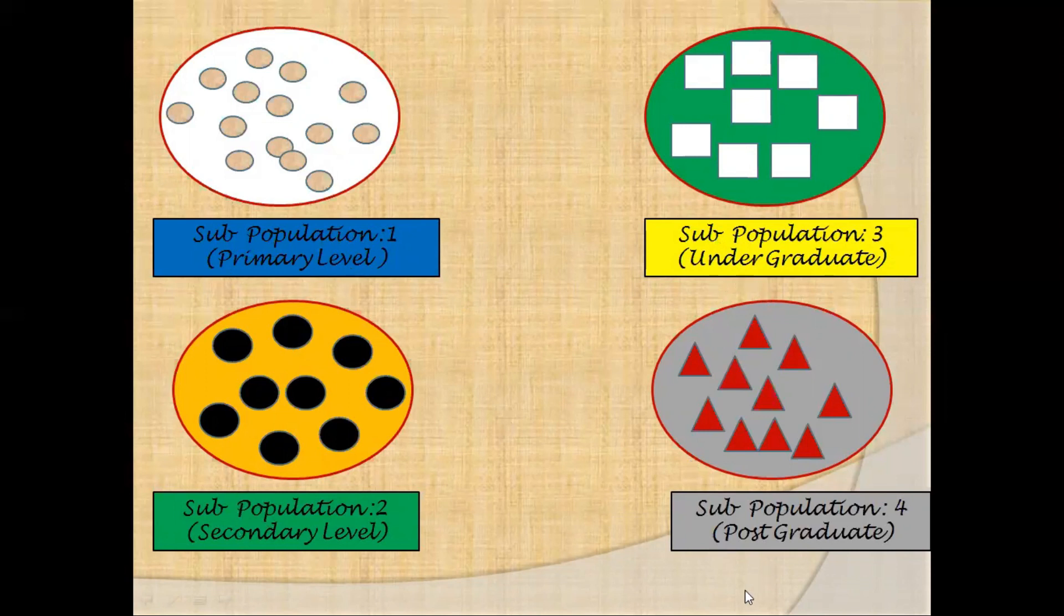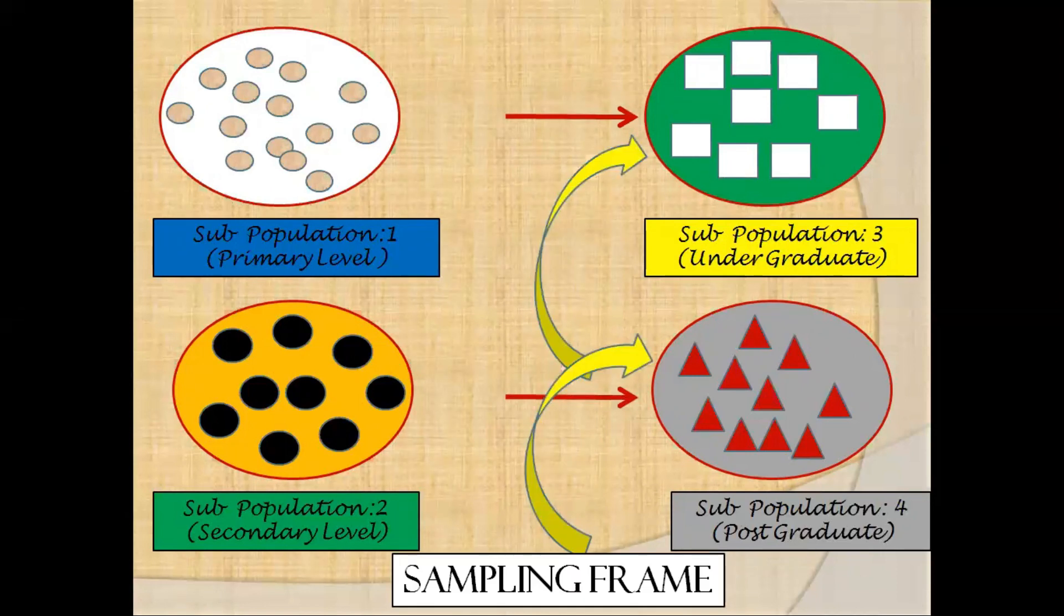Out of the four sub-populations, let's say the researcher will select two out of four for sample collection. Let's say the selected sub-population will be the sub-population 3 and sub-population 4. So in this case, the sub-population from where the researcher decides to collect his sample from is referred to as the sampling frame. In this example there will be two sampling frames: sampling frame 1 will be this and sampling frame 2 will be this. Now from each sampling frame, the researcher will select the samples that will represent the respective sub-population.